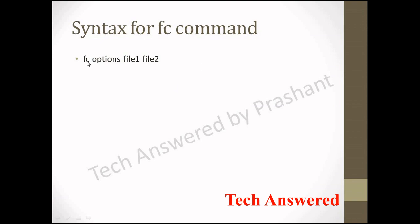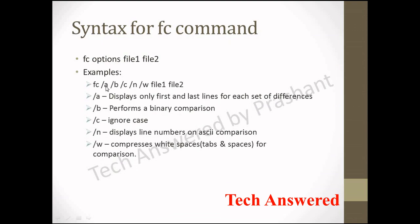You have to give the command name, a couple of options, and then specify file1 which you want to compare with file2. It can be in C drive, E drive, or any drive — you just have to specify the full location of file1 and file2, and then the fc utility will compare the two files for you. There are options such as A, B, C, and W. There are other options as well but these are the most practically used ones.